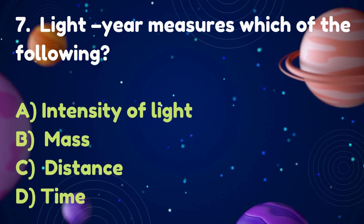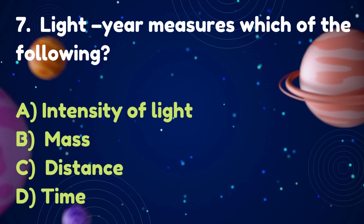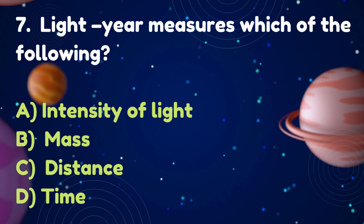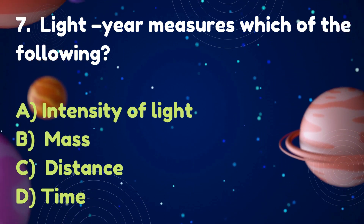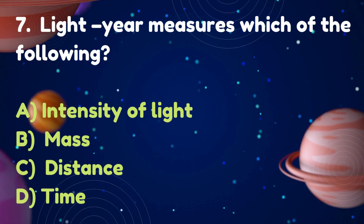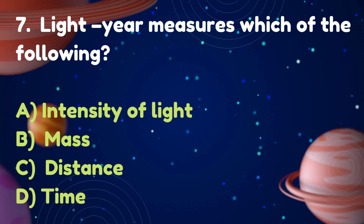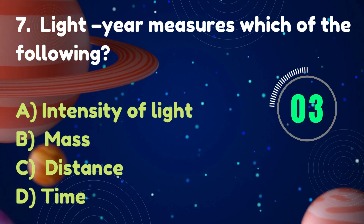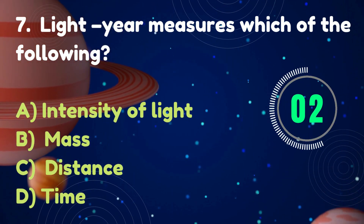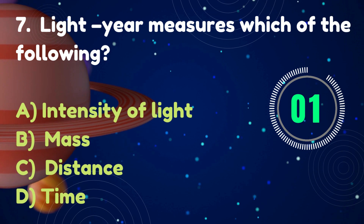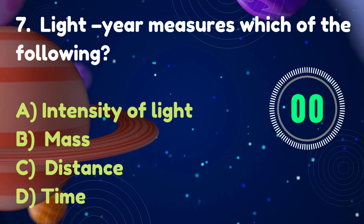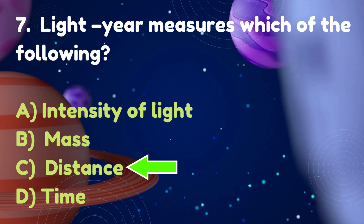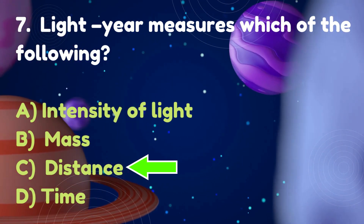A lightyear measures which of the following? Options: Intensity of light, Mass, Distance, Time. Answer: Distance.